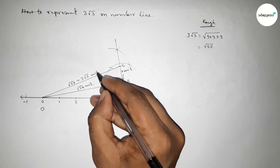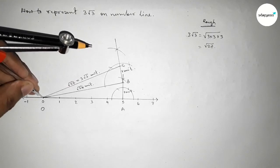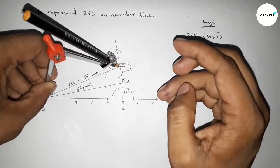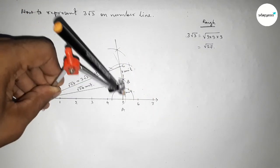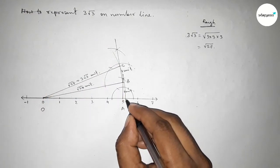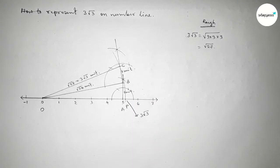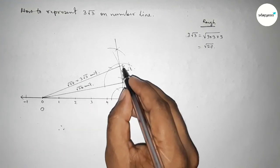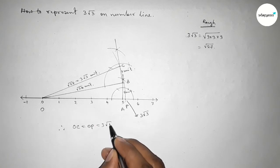Finally, we take the length OC equal to 3√3 units using the compass and draw an arc that meets the number line at point P. Therefore, distance OP equals OC, which equals 3√3 units. This point P represents 3√3 on the number line.